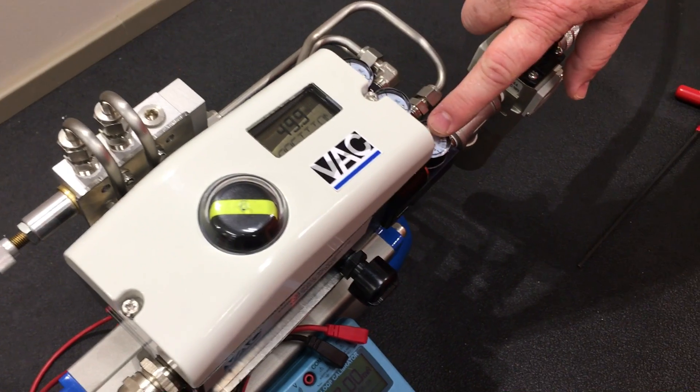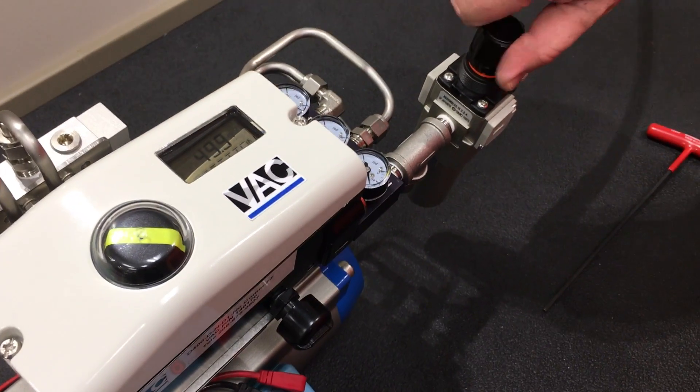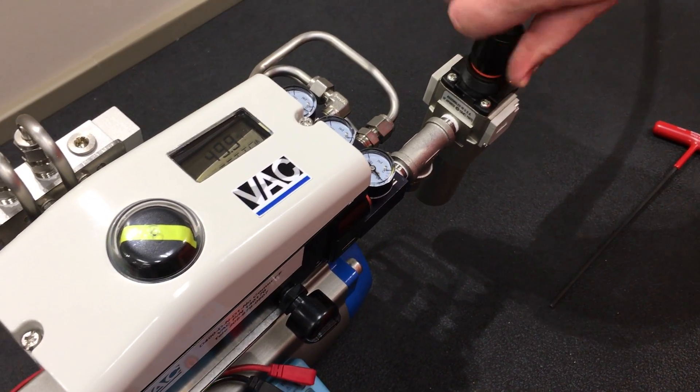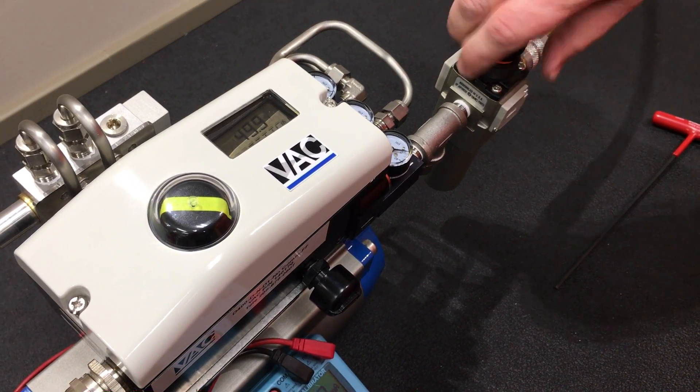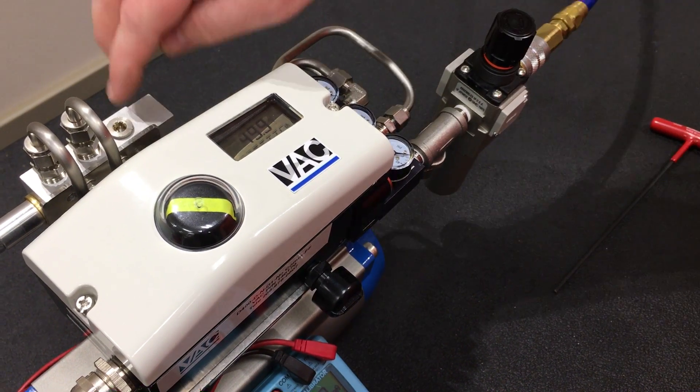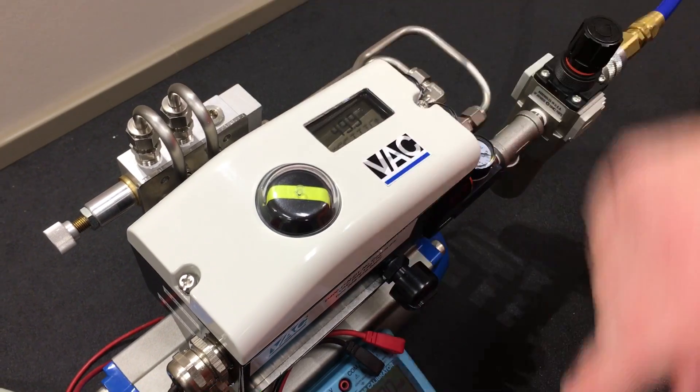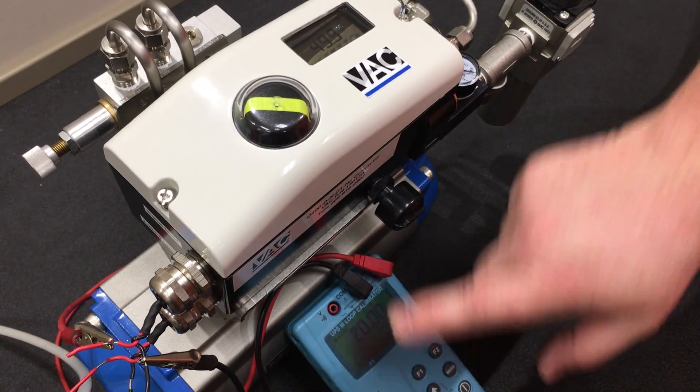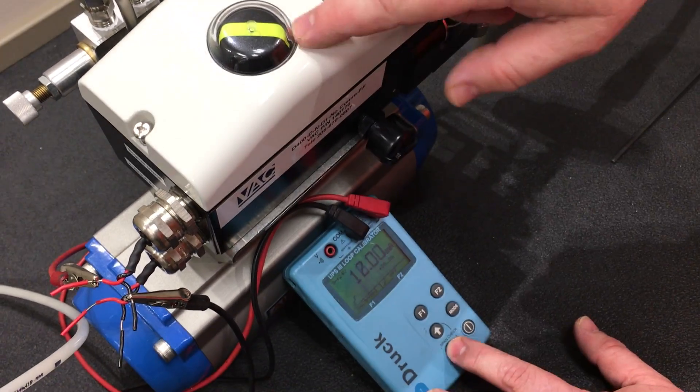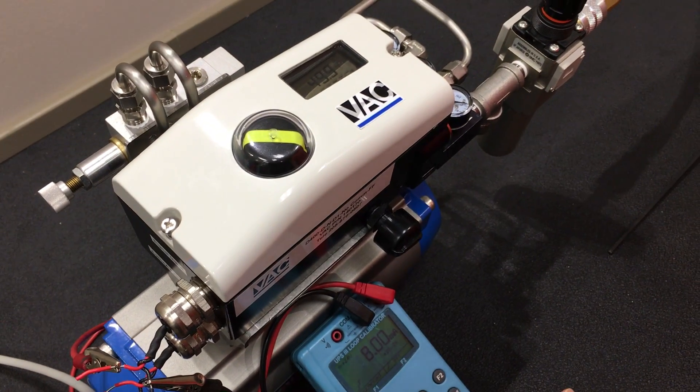We will simulate by dropping air pressure. Now the lockup valve has locked all ports closed. We will change the signal and we'll see that no matter what signal we give it, there is no change in position.